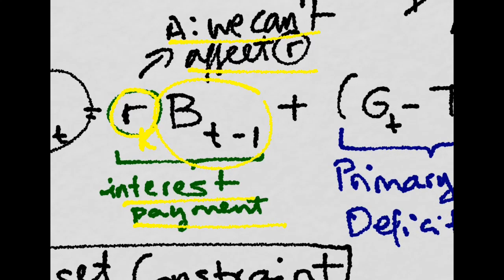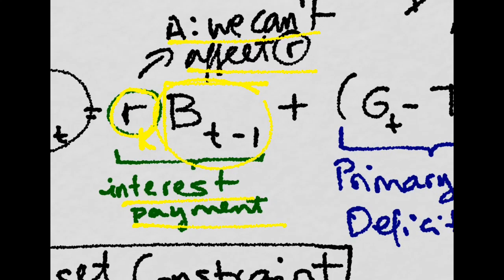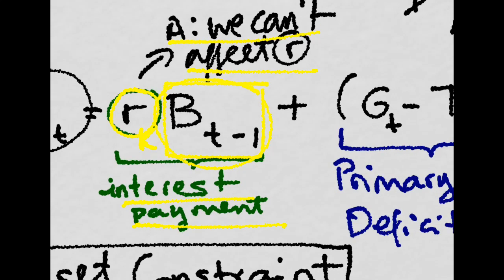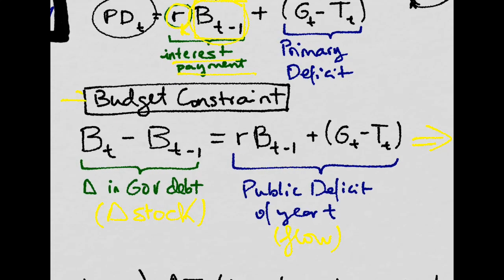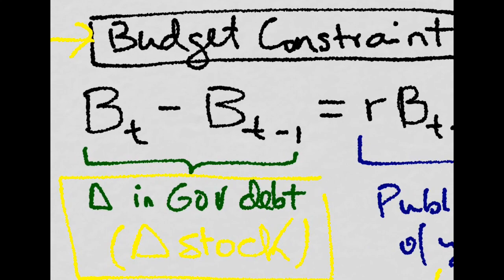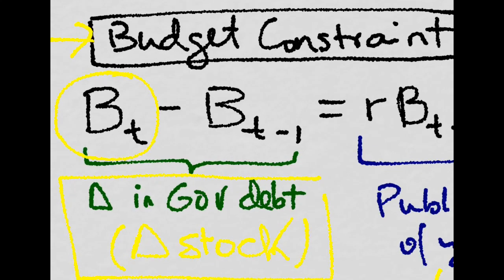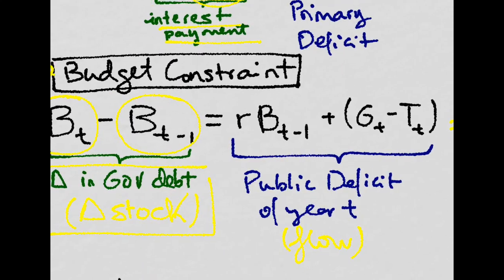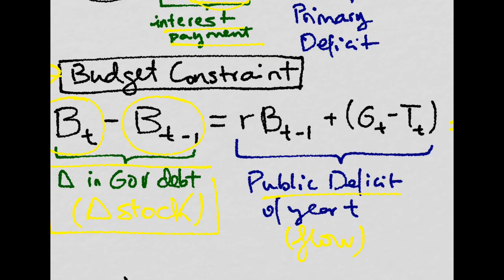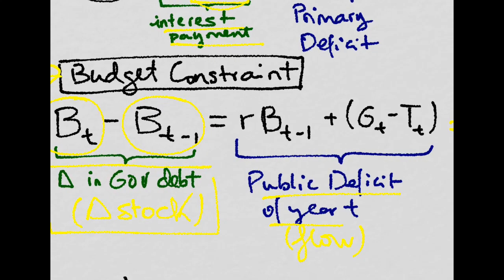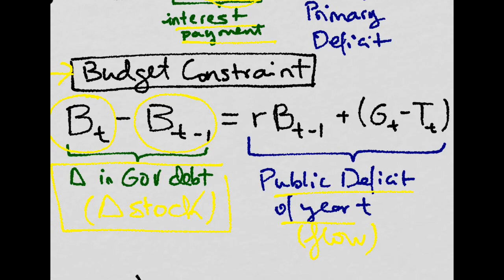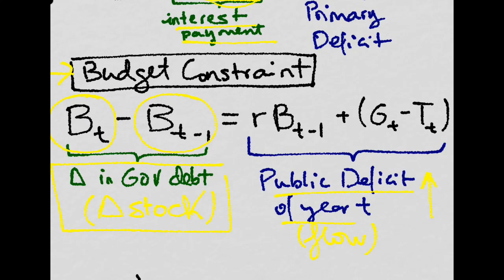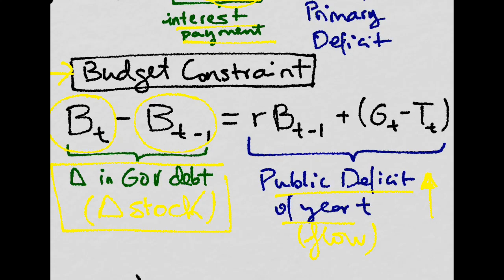Now, the budget constraint expression says that the change in government debt, the change in the stock, that is bonds, public bonds today minus public bonds yesterday, are equal to basically the public deficit of this year. So the public deficit is the number of bonds that have to be issued this year, which is a flow.